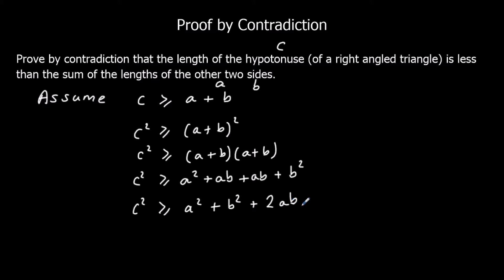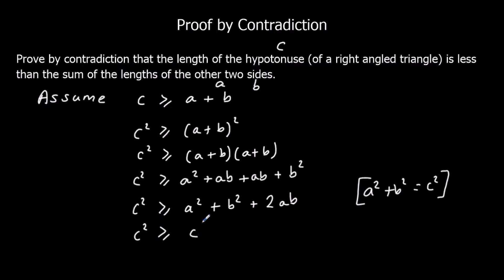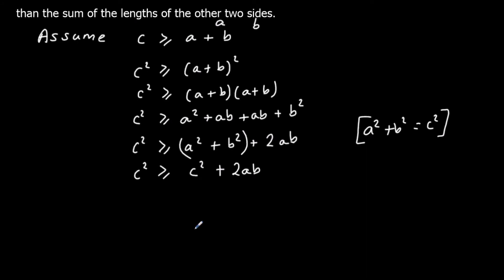We know from Pythagoras that A squared plus B squared equals C squared. So I'm going to substitute A squared plus B squared with C squared. That gives me C squared is bigger than or equal to C squared plus 2AB. And if I take C squared off of both sides, that means I've got zero is bigger than or equal to 2AB.